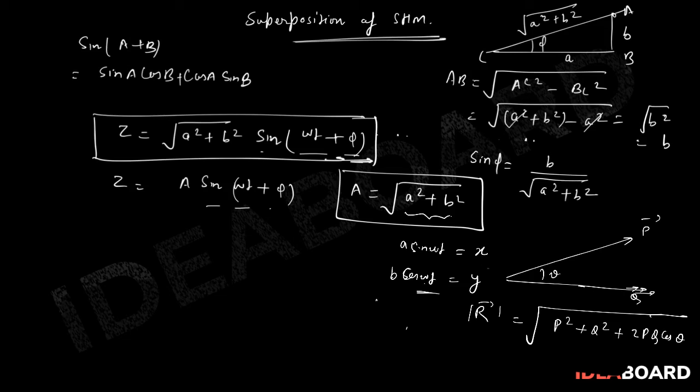You can clearly see this Y could have been written as cos pi by 2 minus or pi by 2 plus omega T. Both are same thing. This is sine. This Y could have been written as B sine pi by 2 plus omega T.